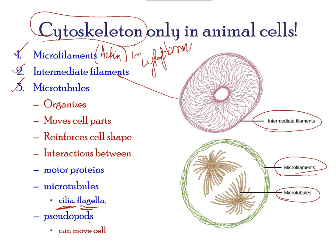Flagella are long hair-like structures that extend from the plasma membrane and are used to move an entire cell — for example, a sperm cell or a euglena cell. Cilia are many in number and extend along the entire surface of the plasma membrane. They are short hair-like structures used to move the entire cell, such as in a paramecium.